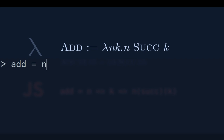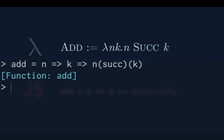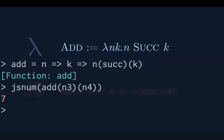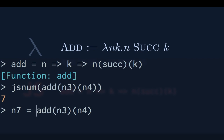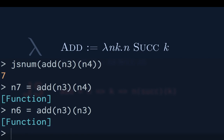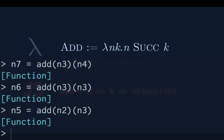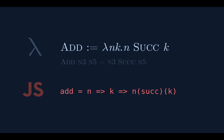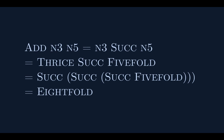We convert to JavaScript: add of n3 and n4 is 7 — it works. We can store more numbers: n7 is that church numeral, n6 is addition of 3 and 3, n5 is addition of 2 and 3. So now we have church numerals 0 through 7. n3 successor n5 is saying thrice successor of five-fold, which is eight-fold. Church arithmetic — we now have addition.